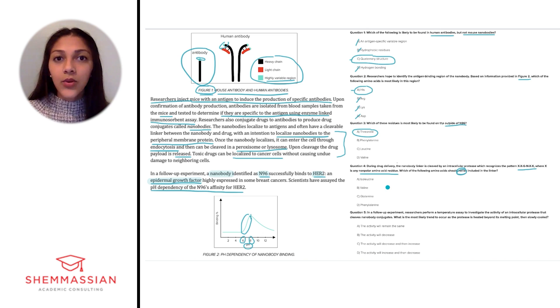Based on the question stem, we know we're looking for an amino acid that is non-polar. Isoleucine, valine, and phenylalanine are non-polar residues, and thus could not be used in the linker. Or sorry, thus could be used in the linker. Glutamine, however, is a polar amino acid and could not occupy the X positions, and for that reason is the correct answer choice to this question.